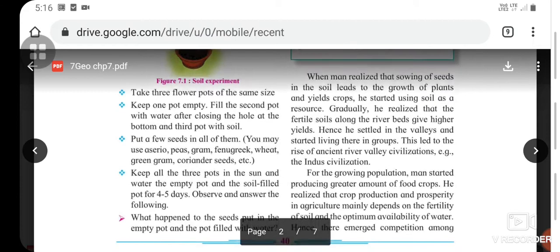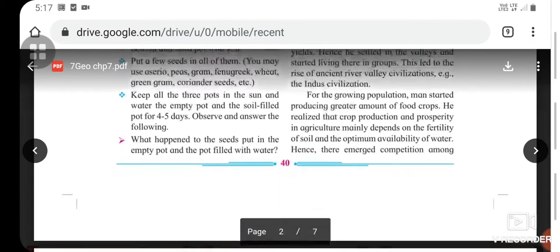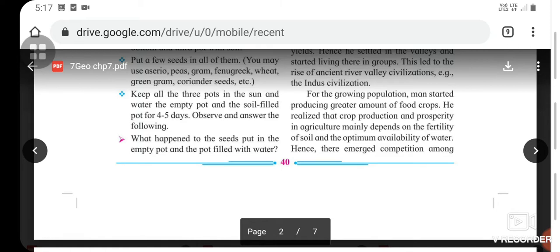When man realized that sowing seeds in soil leads to growth of plants and crop yield, he started using soil as a resource. Gradually he realized that fertile soils along riverbeds give higher yields, so he settled in valleys and started living there in groups. This led to the rise of ancient river valley civilizations, for example the Indus civilization. With growing population, man started producing greater amounts of food crops. He realized that crop production and prosperity in agriculture mainly depends on soil fertility.